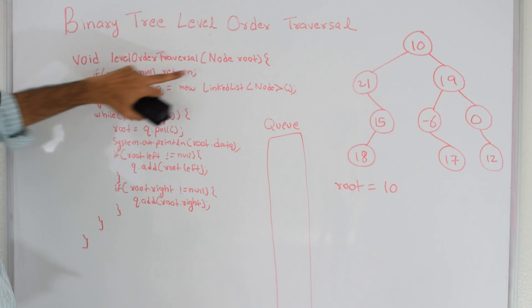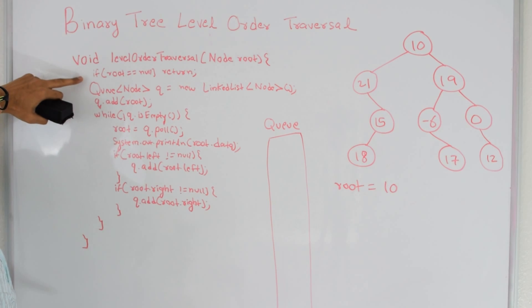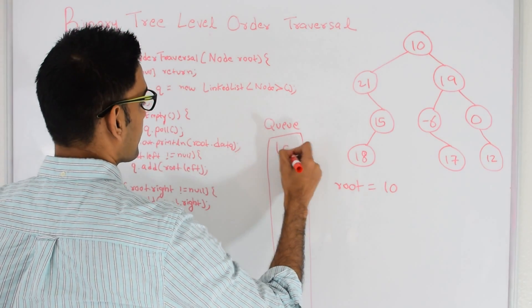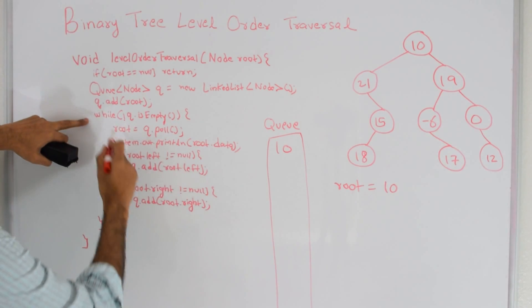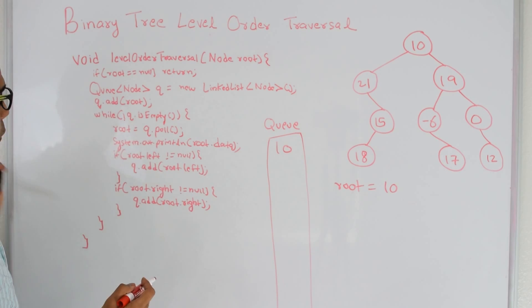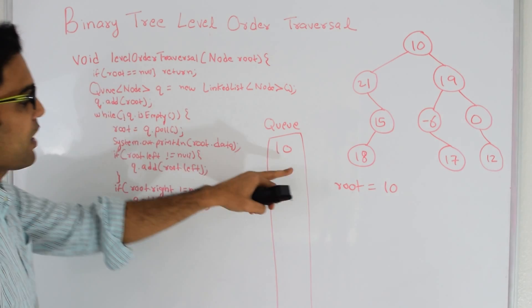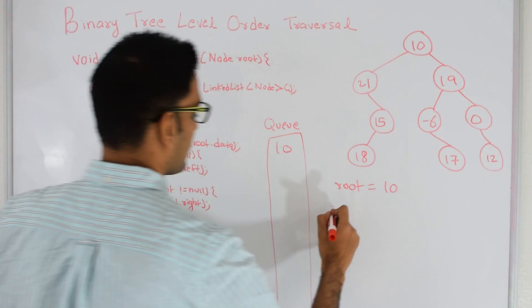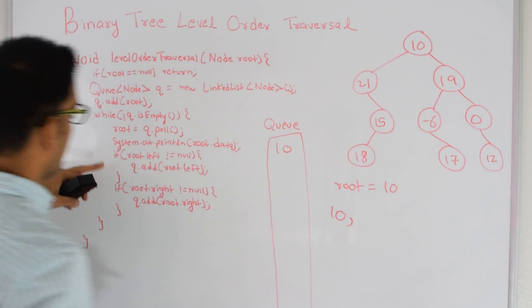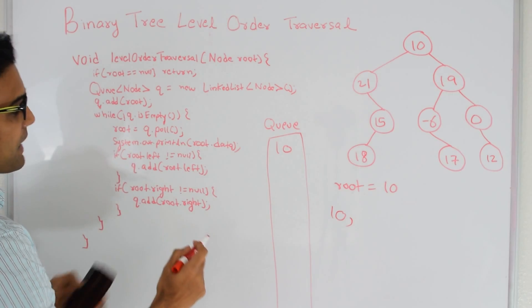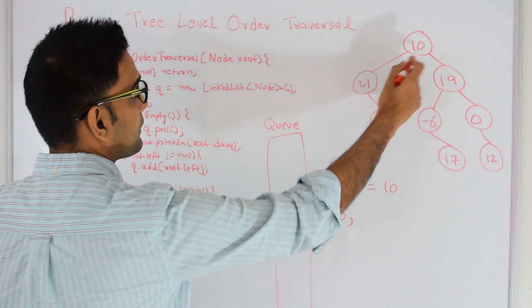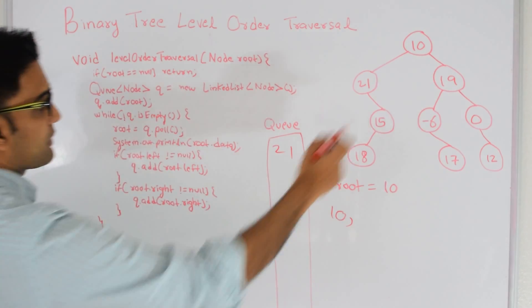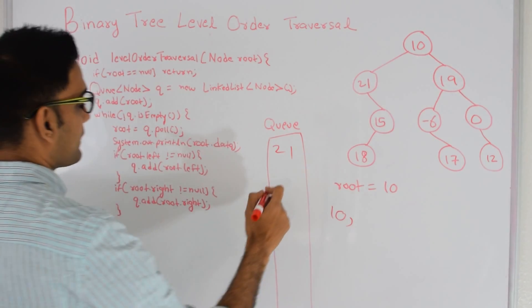Let's see how that works with this example binary tree. My root is 10, so root is not null. We create the queue and add 10 to it. While queue is not empty, we pull — root becomes the queue's top, which is 10. First thing we do is print out 10. Then since 10 has a left, we add that to the queue, and since 10's right is not null, we add that to the queue as well.